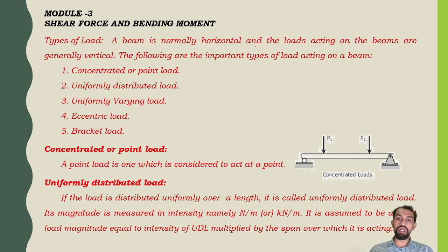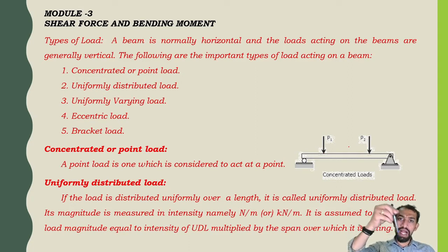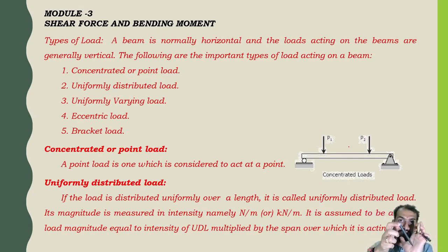Types of loads: a beam is normally horizontal and loads acting on beams are generally vertical. The important types of load acting on a beam are: concentrated or point load, uniformly distributed load, uniformly varying load, eccentric load, and bracket load. A point load is one which is considered to act at a particular point.